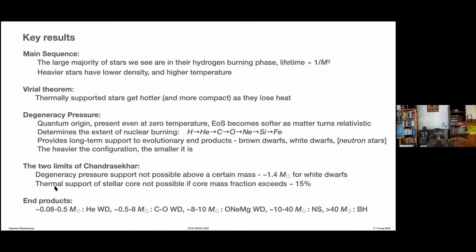We also saw the Schönberg-Chandrasekhar limit, which tells us that thermal support of a stellar core is not possible if the core mass fraction exceeds a certain value — roughly about 15% for typical stellar parameters. If the core mass exceeds 15% of the total mass of the star, the core cannot be supported by thermal pressure anymore. It just contracts and collapses and finds support in degeneracy pressure. That is a key element in deciding how stellar evolution proceeds.